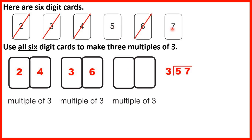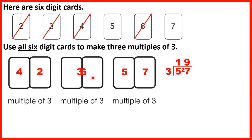That leaves us with 5 and 7. Let's check whether 57 is a multiple of 3. We can divide: 57 divided by 3 gives us 1 remainder 2, then 27 divided by 3 is 9 with no remainder. So we know that 57 is a multiple of 3. Interestingly, if you switch the digits around, you still have a multiple of 3. So the answers can be 24 or 42, 36 or 63, and 57 or 75.